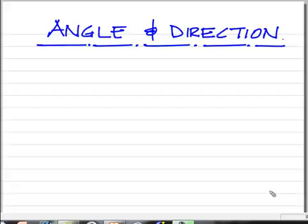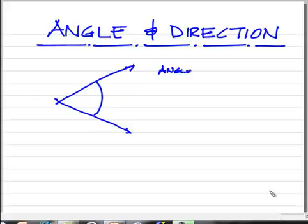Now it's time to talk about the difference between angle and direction. If I have two lines that intersect, we can say the angle between those two lines is the difference in direction. So an angle is the difference in direction of two lines.